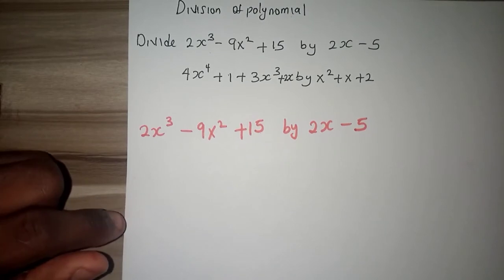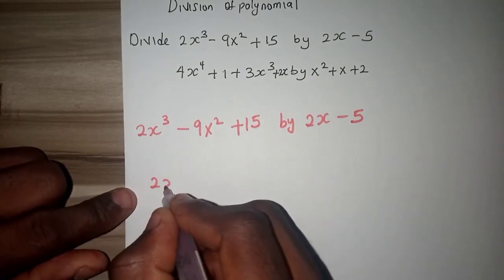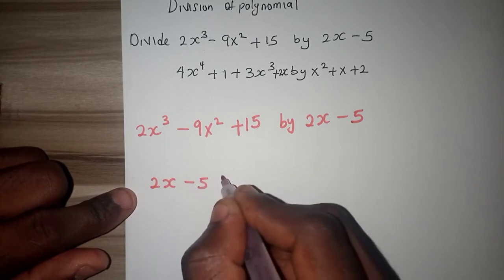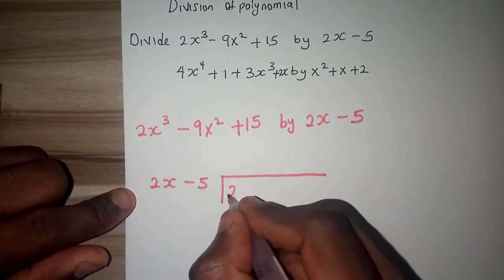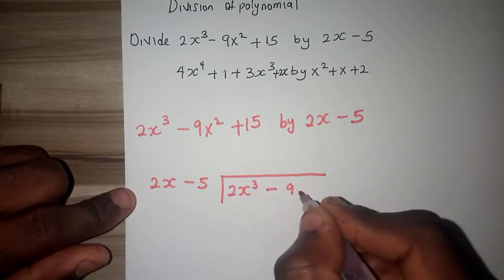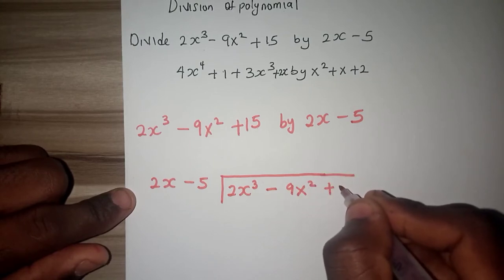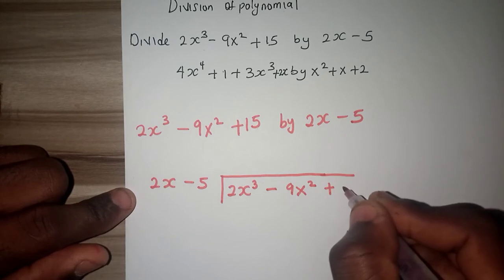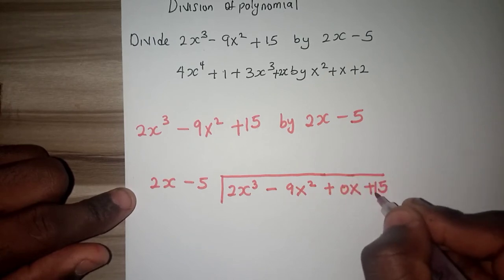Now when you have something of this nature, you can rewrite this as 2x minus 5, the way you can normally divide it, 2x cubed minus 9x squared plus 0x plus 15.